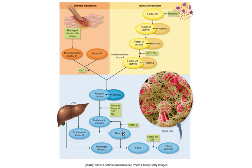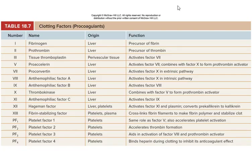They test your prothrombin time by taking your blood, putting a drop of it, and watching it clot while timing it — less than a minute is normal. This table summarizes the clotting factors. Note that most of them are made in the liver, and some are in the platelets themselves. The two key precursor relationships to know: fibrinogen is the precursor to fibrin, and prothrombin is the precursor to thrombin.